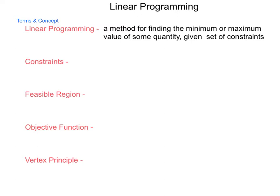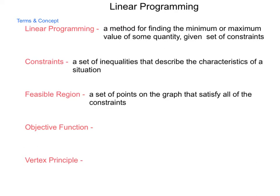The constraints are a set of inequalities that describe the characteristics of a situation. When we provide and graph all of our constraints, it gives us a feasible region, which is a set of points on the graph that satisfy all the constraints.